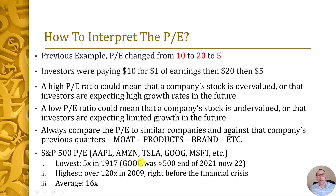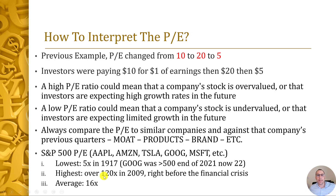Google had a PE over 500 at the end of 2021 — now it's down to 22. There was a time when Tesla and Amazon had a PE over 1000 and people were gobbling up the stock. Could you imagine the demand for Tesla with a PE of 5? At its highest point, the S&P 500 had a PE of 120, right before the market crashed in 2009. But across its history, the S&P had a PE of 16.